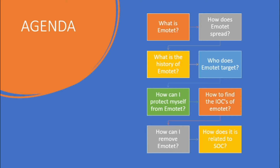What is Emotet? Then we will discuss how Emotet spreads — there are maybe 2 to 3 slides and 2 diagrams to help understand how it actually spreads. Then we will discuss the history of Emotet, from where it started, which year it started, who Emotet targets, what the target industries are, how you can protect yourself and your organization from Emotet, how to find the IOCs, and what you can do if the system is already compromised — that is, how to remove Emotet. And at last, how it is related to SOC.